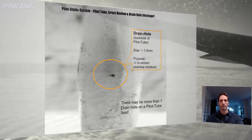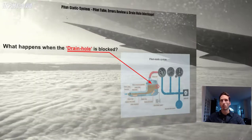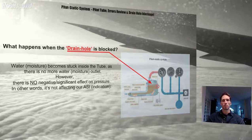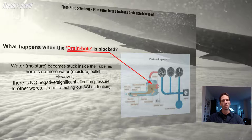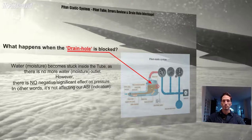So since you know how a drain hole looks, if this one is blocked, yes, we may have a slightly higher pressure within the pressure chamber, but it will not be indicated by our airspeed indicator. In other words, if we have the drain hole blocked, we will have no negative or significant effect on our airspeed reading. The needle will not move more than before. There might be a tiny bit of higher pressure in there, but it's not enough to give us a higher airspeed indication.